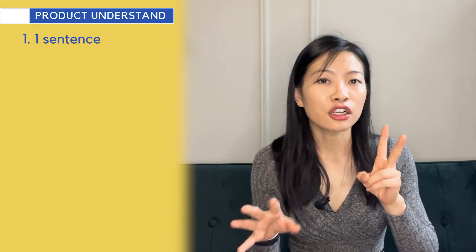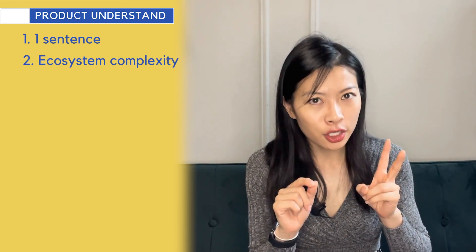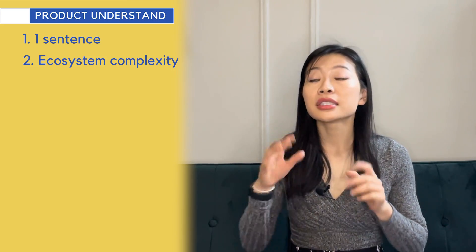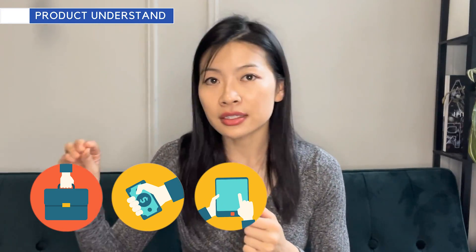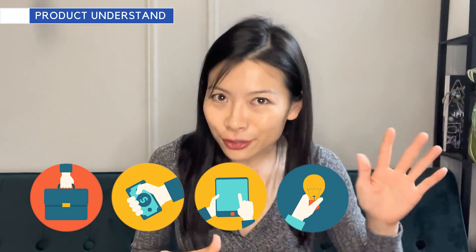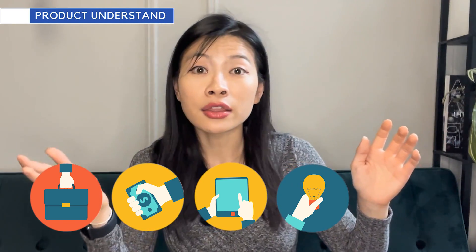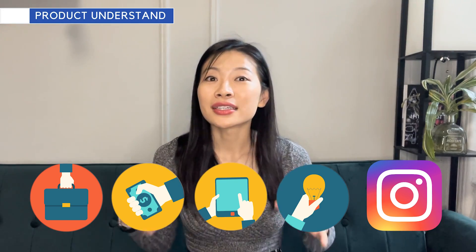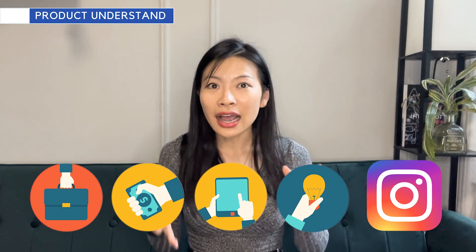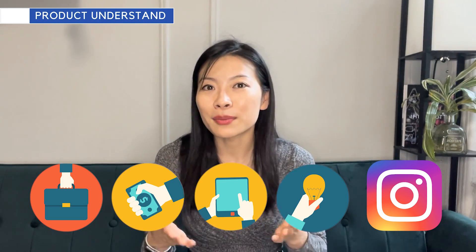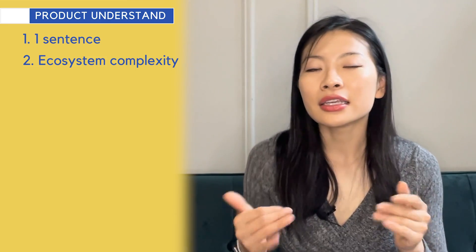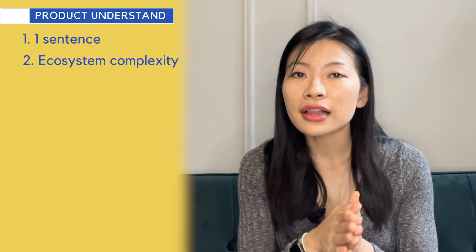The second part of product understanding is calling out the complexity of the ecosystem. A senior leader differentiates themselves by identifying that in the Instagram Shops ecosystem, there are businesses, shoppers, advertisers (which the businesses are), creators who advertise on the businesses' behalf, and Instagram itself — the key stakeholder designing the product, whose interests you must also satisfy.